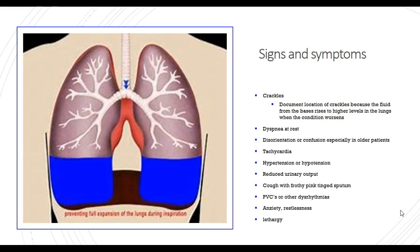Signs and symptoms: crackles or rales are the adventitious breath sounds, and you want to document their location because fluid rises from the bases to higher levels as the condition worsens. Dyspnea at rest is a classic sign because we'd expect some dyspnea after exertion, but at rest it means something bad is going on. Disorientation and confusion, especially in older adults. The first and foremost cause of confusion to consider is always hypoxemia or hypoxia, followed by altered blood glucose, UTI in older patients, and medications.